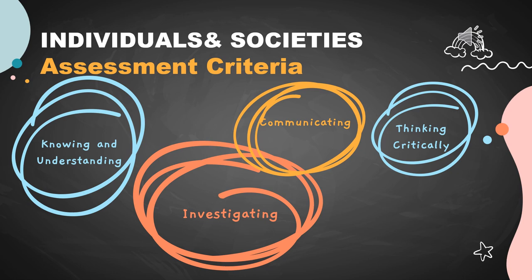Moving on to the assessment criteria — the objectives of any MYP subject state specific targets and define what students will be able to accomplish as a result of studying the subject. Four criteria are taken into consideration. Number one: knowing and understanding, which highlights knowledge and understanding when answering questions related to content, and using correct terms, examples, and explanations relevant to the question. Number two: investigating — investigating a global issue based on the concepts and context of the unit.